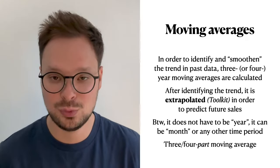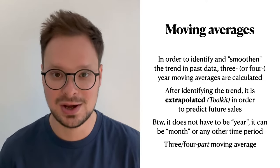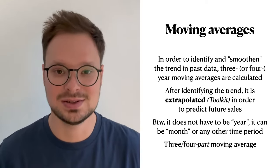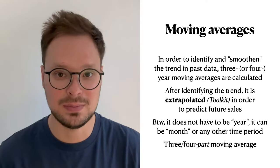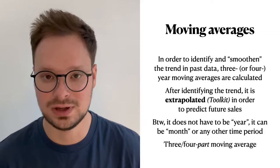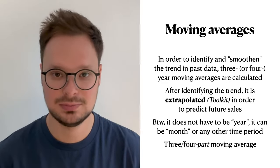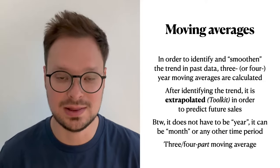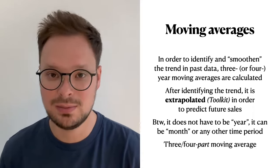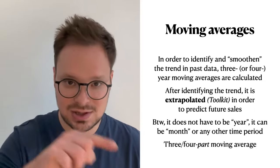You can say three-year moving average, which means the average of three years, or you can say three-part moving average – that means the same thing. The part does not have to be a year; it can be a three-month, three-week, or three-day moving average. We calculate three-part or four-part moving averages to make sure that the trend doesn't look jumpy and is smoother. This way, it'll be easier to extrapolate the trend – prolonging the trend for the future based on past data. The smoother the trend, the easier it is to prolong it.